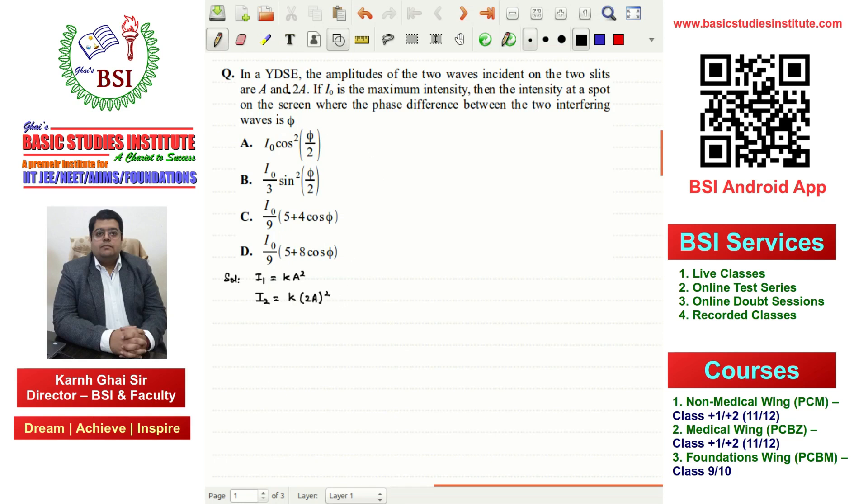Because the second slit has amplitude 2a, this value will be 4 times I1. 2 squared is 4, so ka² is I1, meaning the second slit intensity is 4 times the first slit intensity.